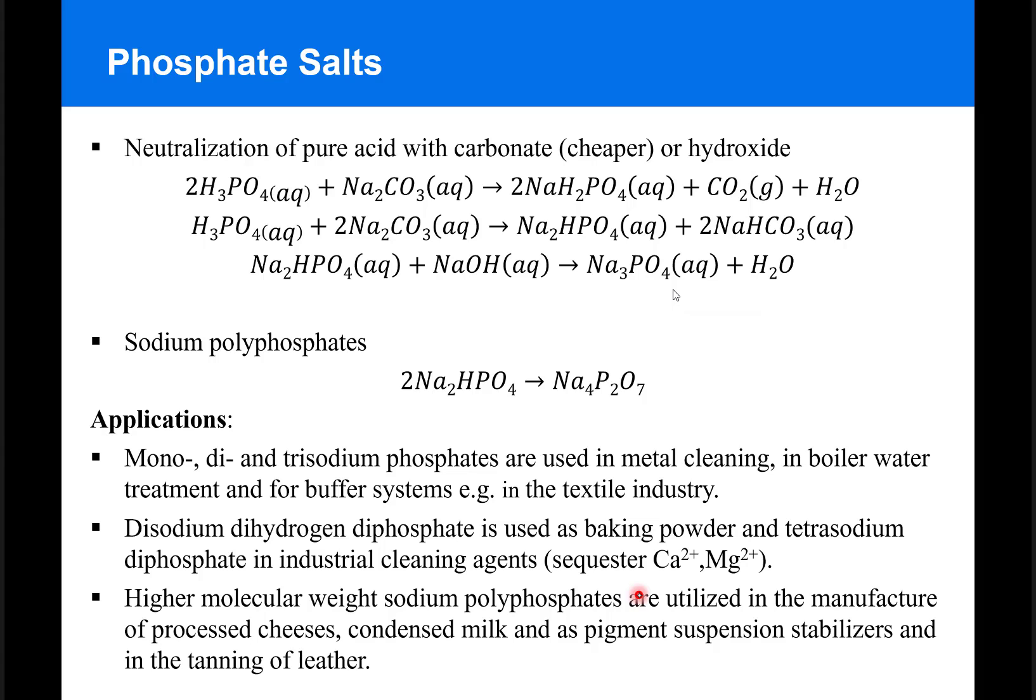The higher molecular weight polyphosphates can be utilized in the manufacture and processing of processed cheese, condensed milk, and as a pigment suspension stabilizer and in the tanning of leather.